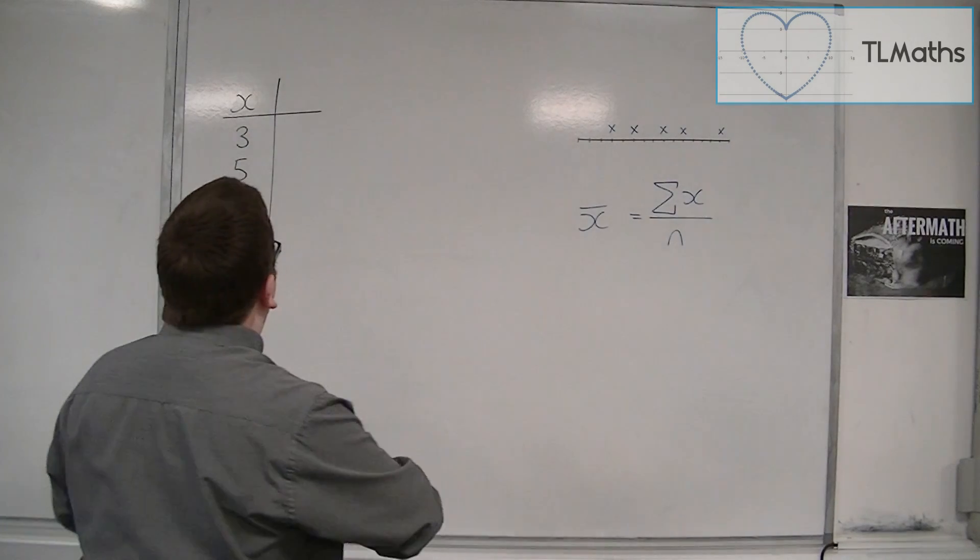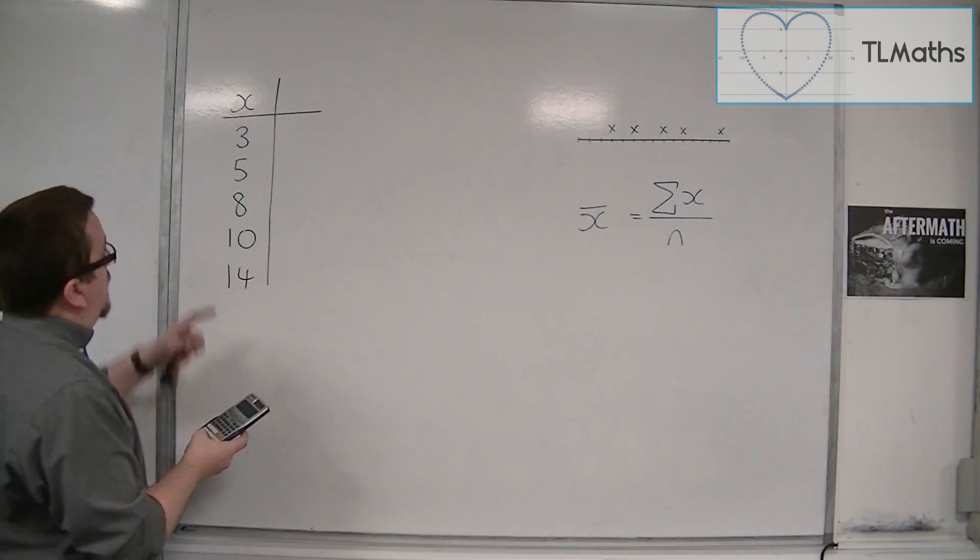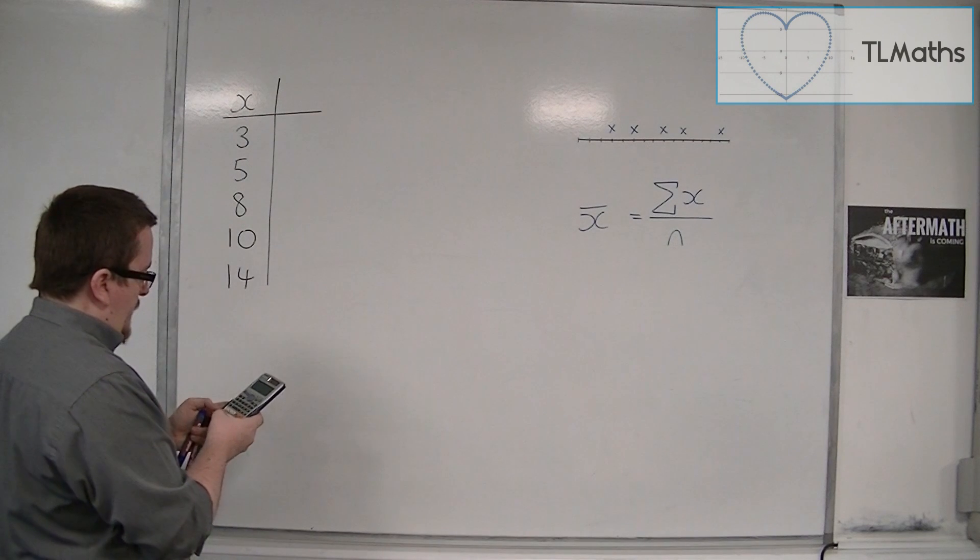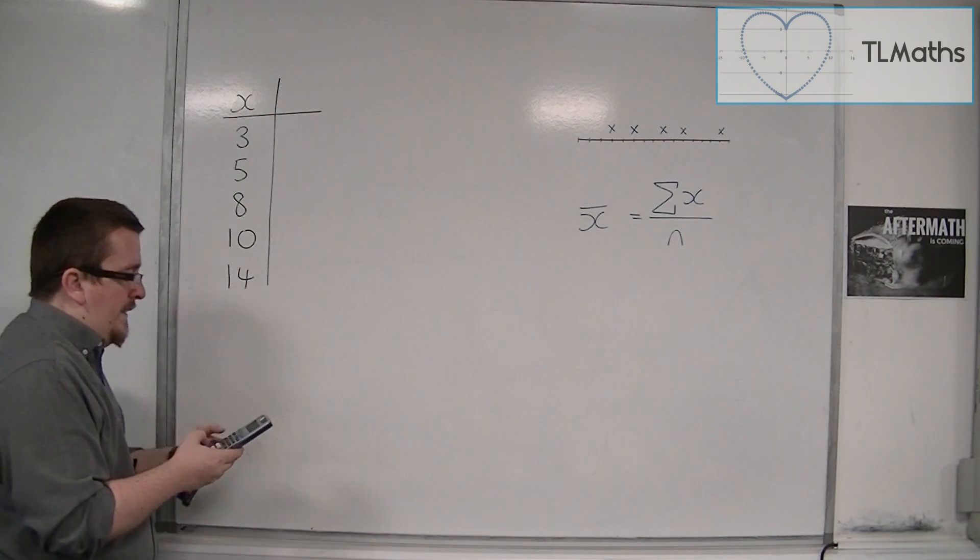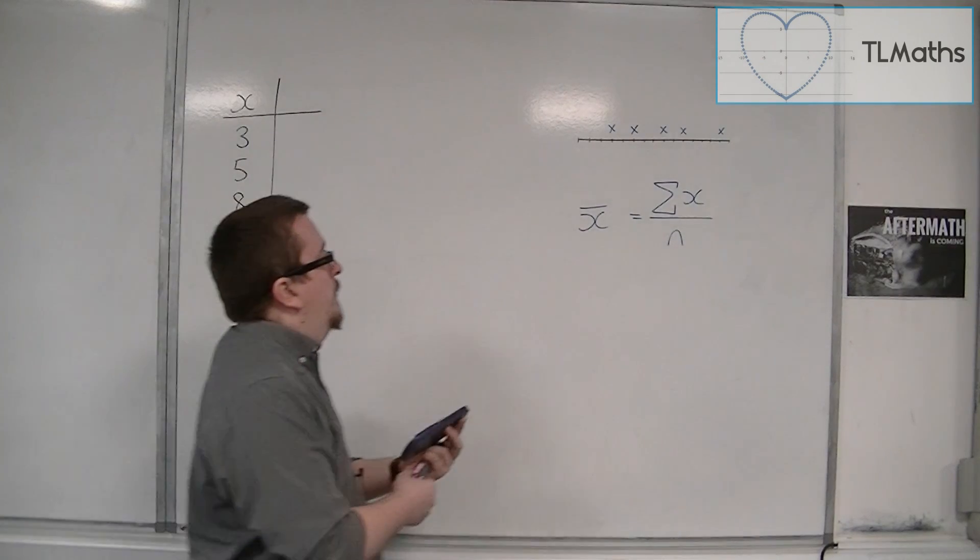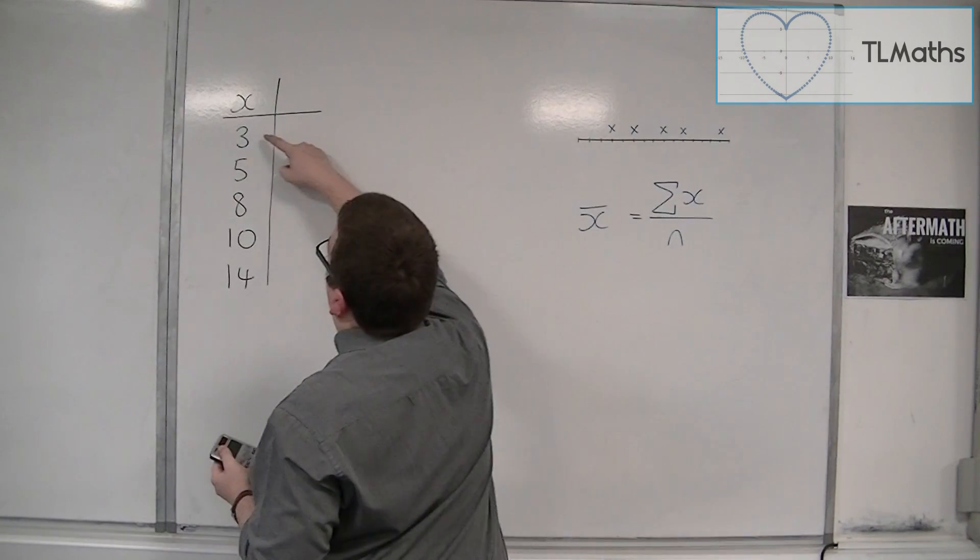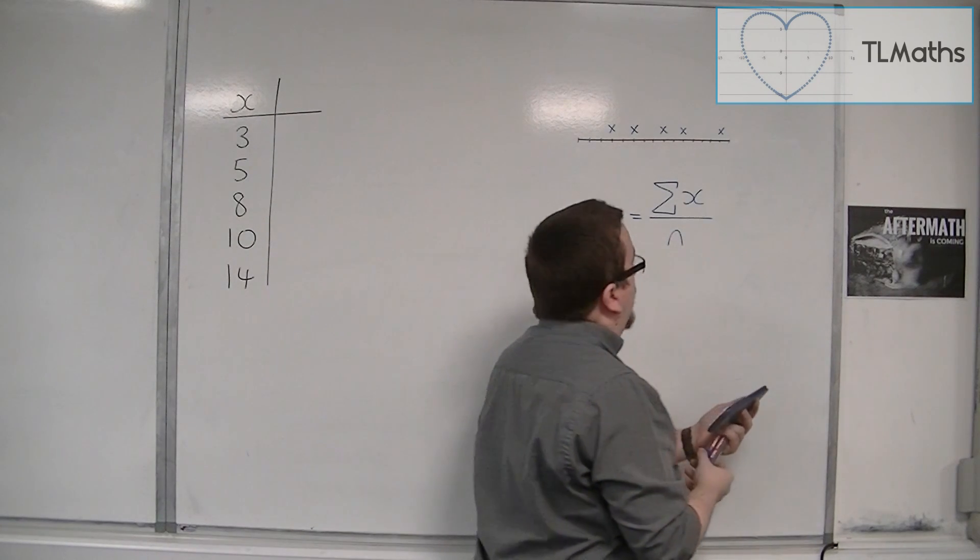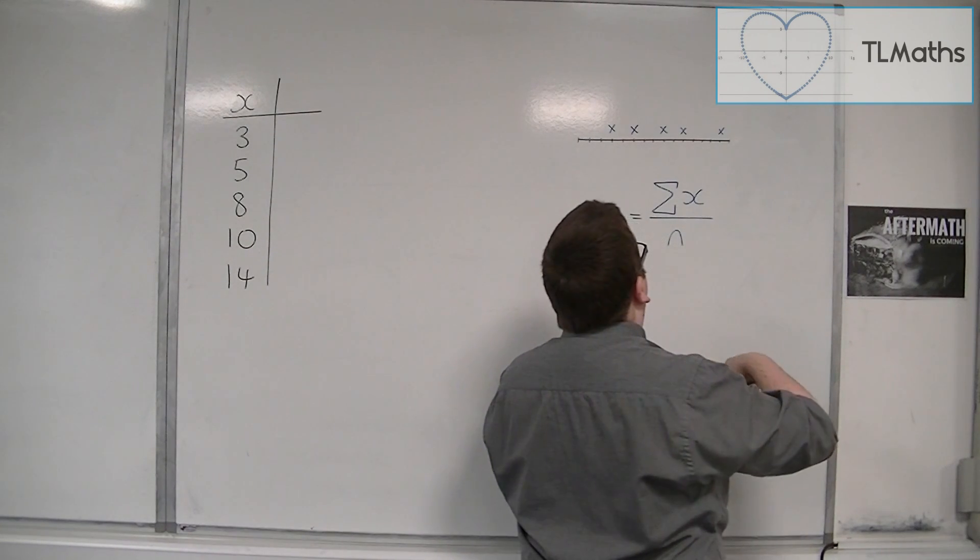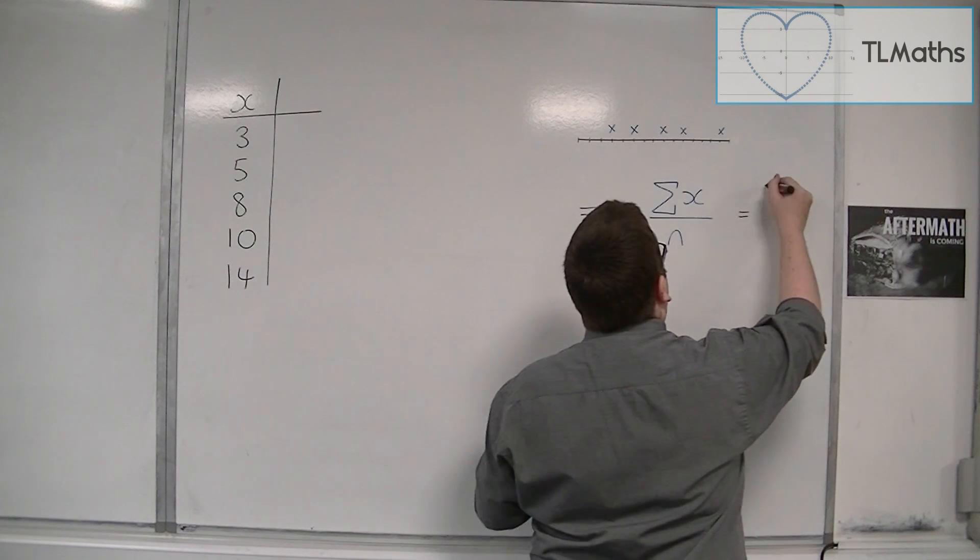So we get our calculator. We get 3 plus 5 plus 8 plus 10 plus 14, and that gets me 40. So 40 divided by 1, 2, 3, 4, 5 is 8. So in our case, x̄ is equal to 8.